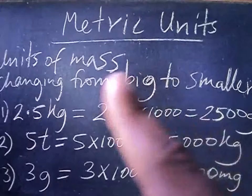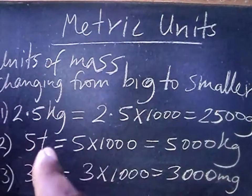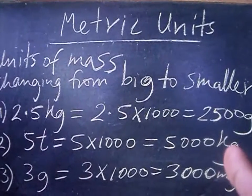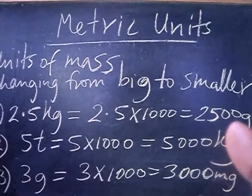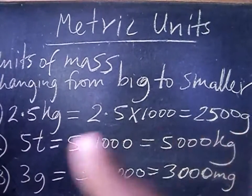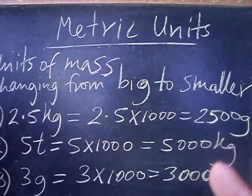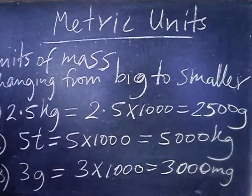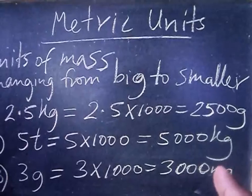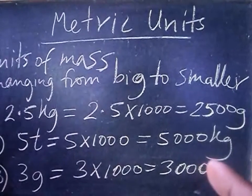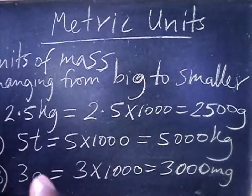Moving from tons to kilograms, remember there are one thousand kilograms in one ton. So five tons is five times one thousand, which gives you five thousand kilograms.